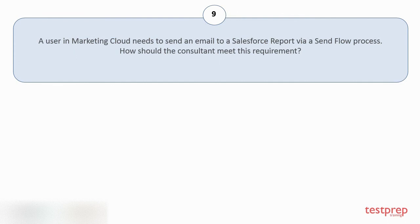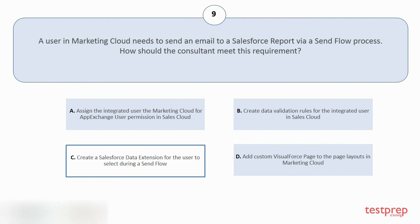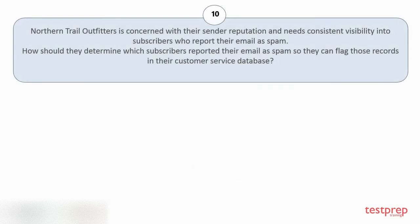Question number nine: A user in Marketing Cloud needs to send an email to a Salesforce report via send flow process. How should the consultant meet this requirement? Options: A) Assign the integrated user the Marketing Cloud for AppExchange user permission in Sales Cloud. B) Create data validation rules for the integrated user in Sales Cloud. C) Create a Salesforce data extension for the user to select during a send flow. D) Add a custom Visualforce page to the page layouts in Marketing Cloud. The correct answer is option C.